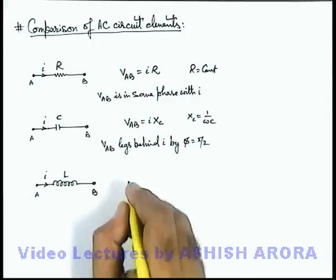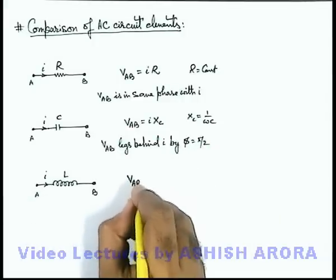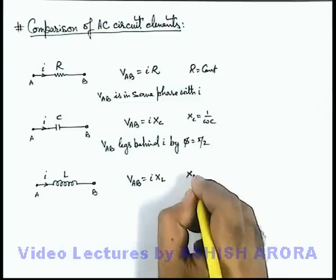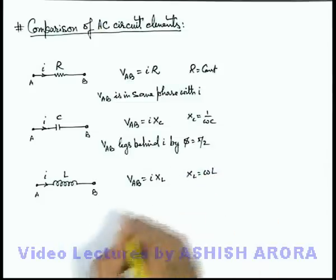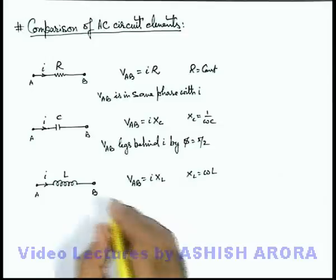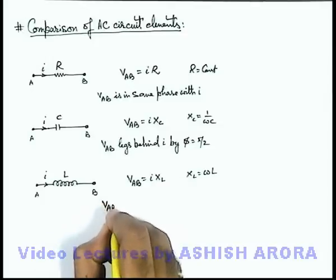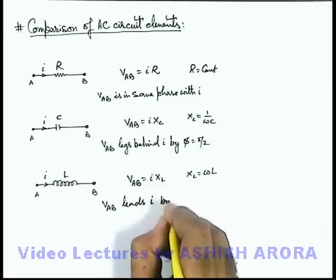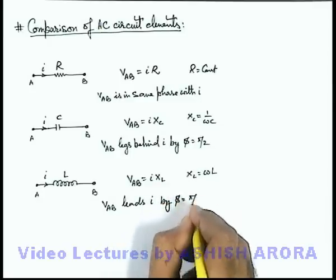Similarly, in case of inductor, the potential difference across inductor we can write as V_AB = iX_L, where X_L = ωL ohms. We already studied that potential difference across an inductor leads current by phase angle π/2.